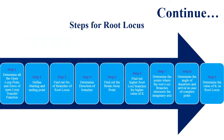The steps to follow for the implementation of root locus are: Step 1 — determine all open-loop poles and zeros; Step 2 — define the starting and ending points of the root locus; Step 3 — find the number of branches; Step 4 — determine the direction of branches; Step 5 — find out the breakaway point; Step 6 — find higher root locus branches for higher values of K; Step 7 — determine points where root locus branches intersect the imaginary axis; Step 8 — determine angle of departure and arrival for complex poles; Step 9 — determine the values of K on root locus.